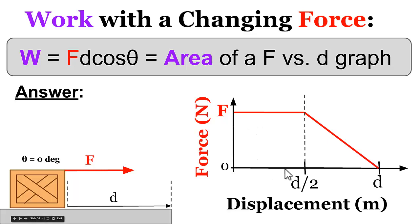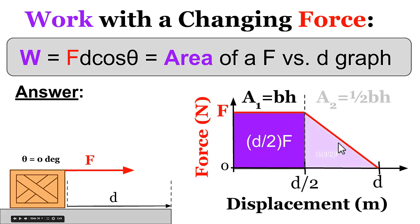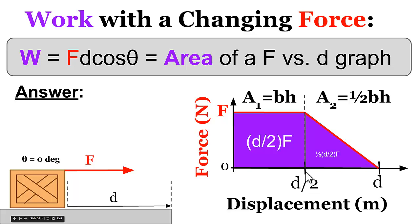The energy transferred to the box over the first half of the displacement is the area of a rectangle: base of d/2 multiplied by height F. The energy added over the last half is less, since the force is decreasing — it's the area of a triangle: one-half times the base of d/2 times the height F.